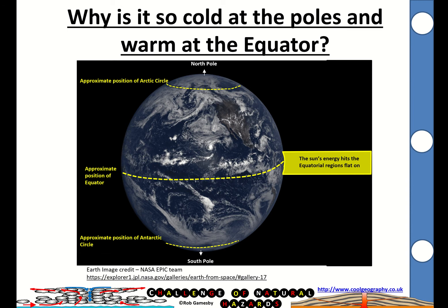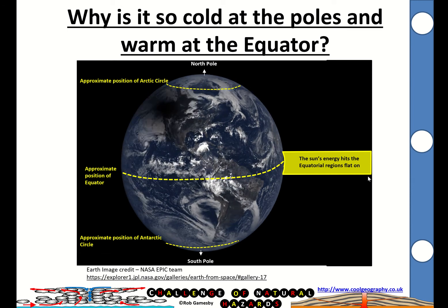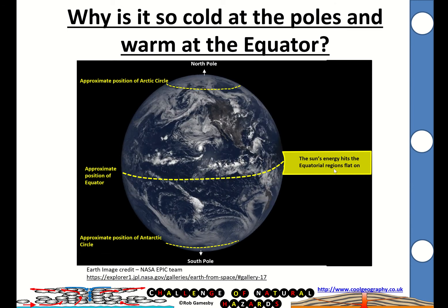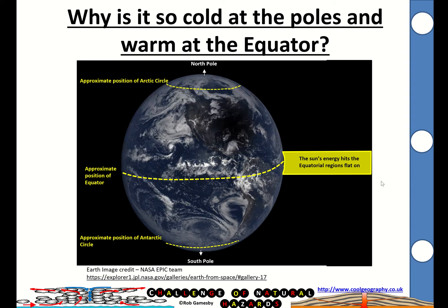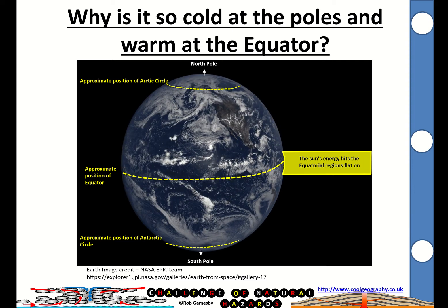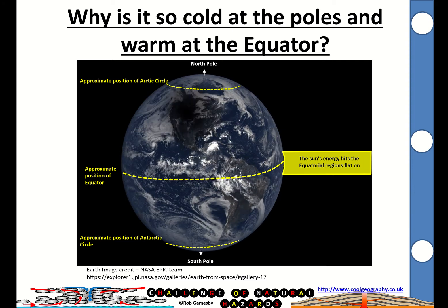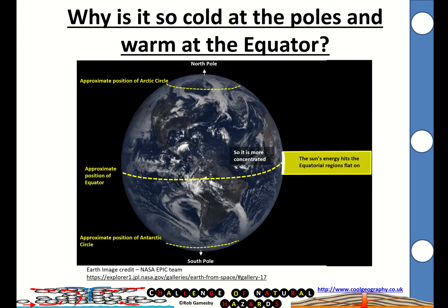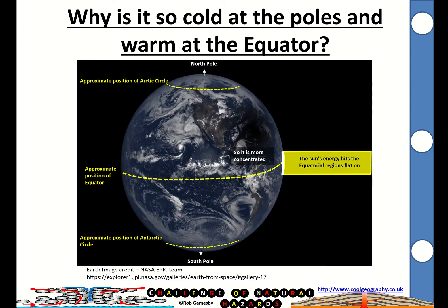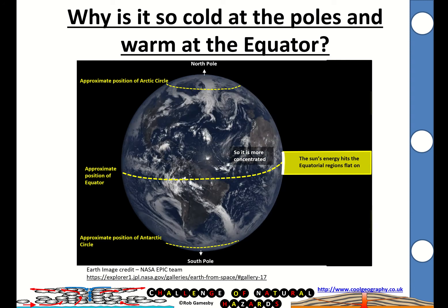The equatorial regions are really warm because the sun's energy hits the equatorial regions flat on. It passes through less atmosphere, so there's less backscatter and it hits flat on. So it's got less surface area to heat for the amount of energy that there is. So the sun's energy is concentrated in equatorial regions.